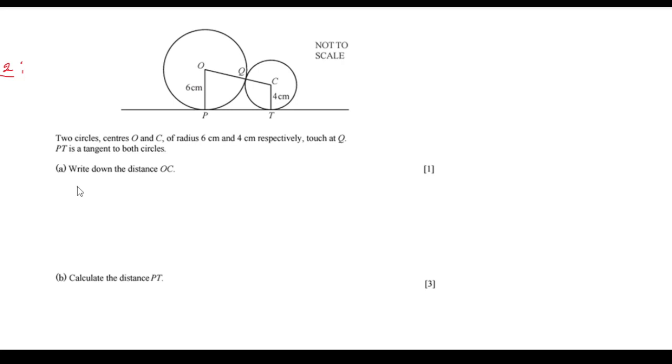Now OC, if you see this distance OC, it is OQ plus CQ or I can say that QC. Now OQ is radius of this larger circle which is 6 and QC is the radius of a smaller circle which is 4. So this total will be 6 plus 4, 10 centimeter.